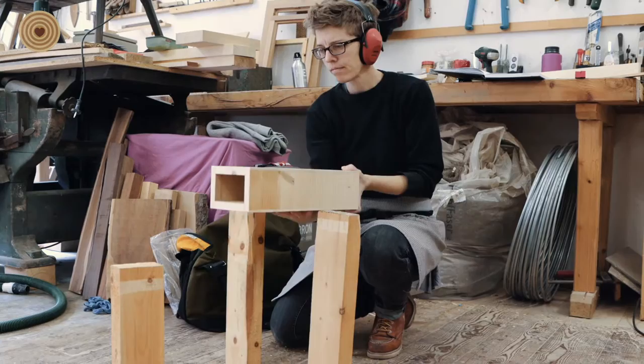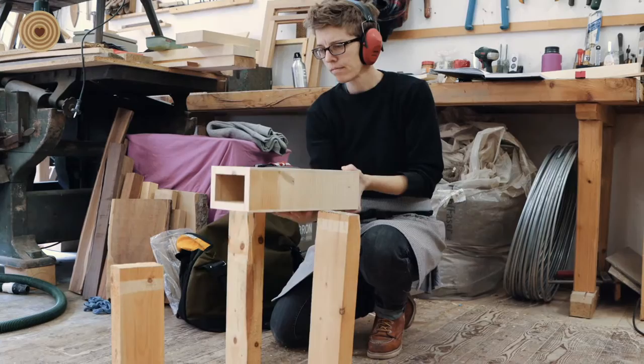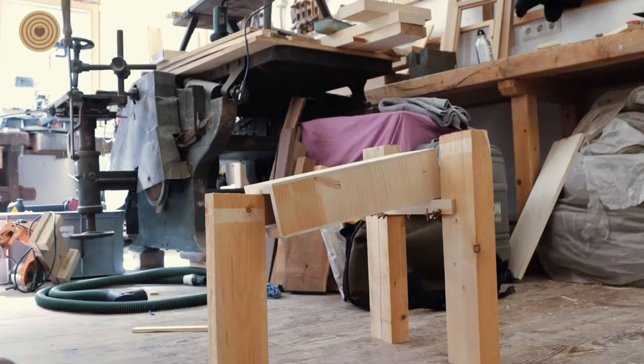You can't glue end grain to end grain. Wood expands and contracts. It breathes with the seasons and with humidity. And it's very strong with the grain and very weak across it. And so those are my three kind of rules with my students.